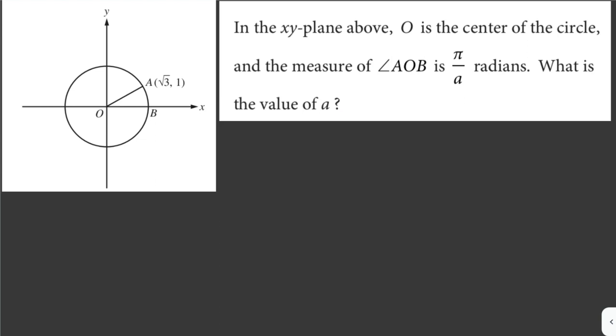Let's solve another problem here. In the xy plane above, O is the center of the circle, and the measure of angle AOB is π over a radians. What is the value of a? The first thing we do here is to find the length of the radius.